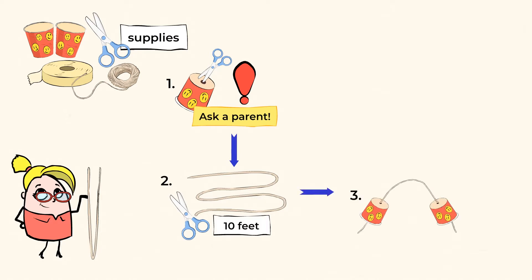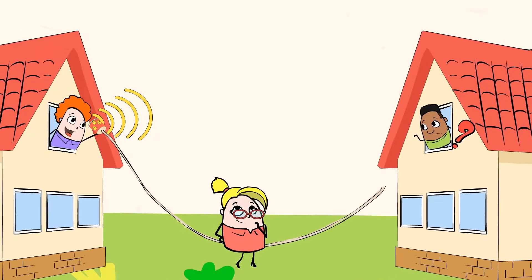Let's put the end of the string through the hole in the bottom of one cup and the other end through the hole in the other cup. We'll tie a knot in the string and use a piece of tape to make sure the string does not fall out of the cup. Now, we're ready to try our phone out.